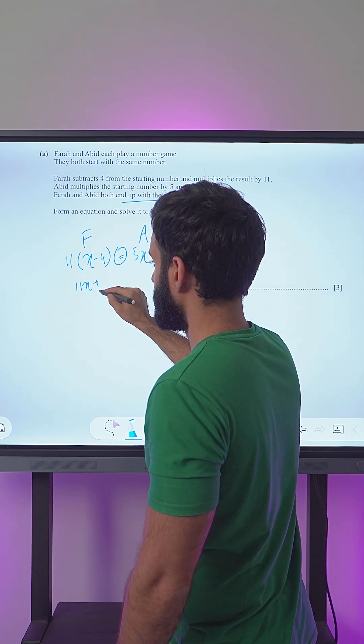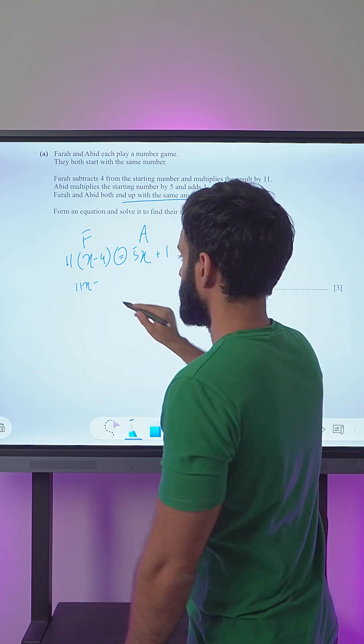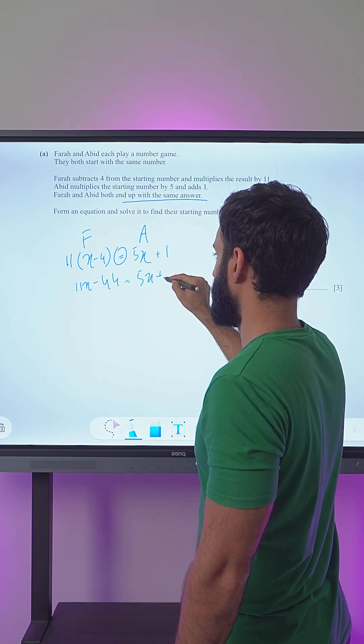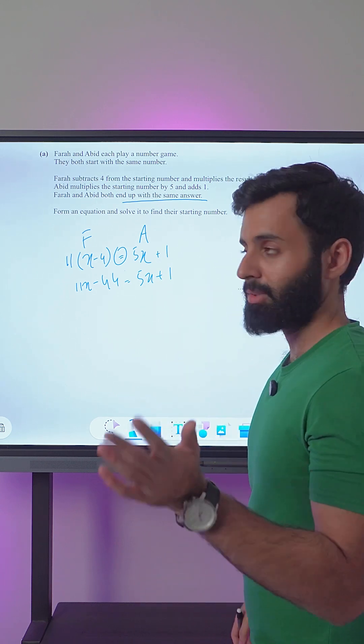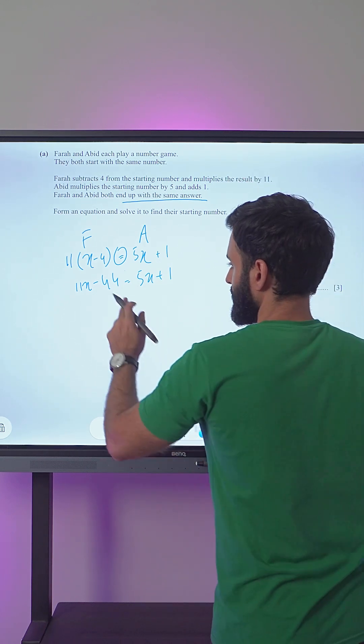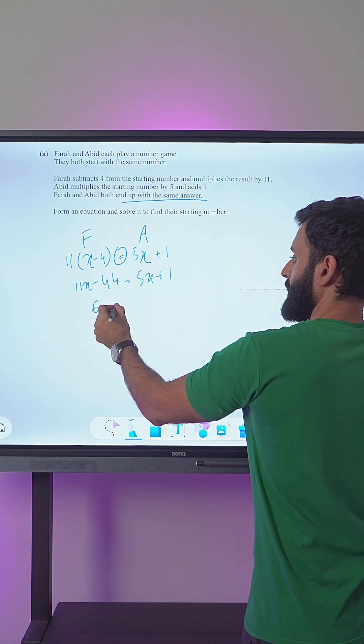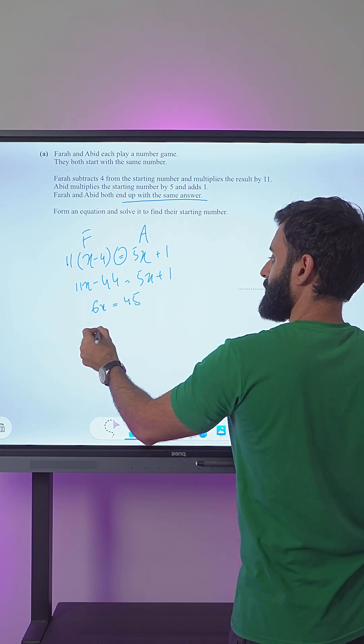So let's do that. 11 into x is 11x. 11 into 4 is 44, so 11x minus 44 equals 5x plus 1. Now let's get all the x's on one side and all the constants on one side. So 11x minus 5x is 6x, and 44 plus 1 is 45.